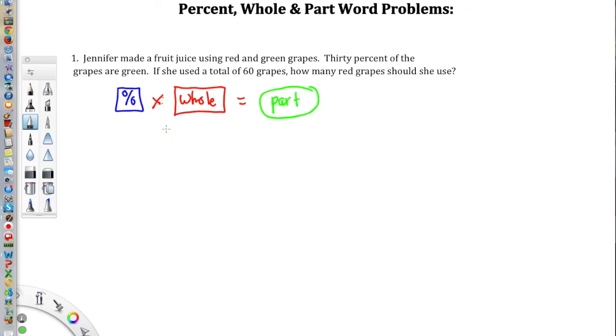Let's read the problem. Jennifer made a fruit juice using red and green grapes. 30% of the grapes are green. Well, 30% are green, so 30%, that would look like that's our percentage of the grapes are green. If she used a total of 60 grapes, total, that sounds like our whole, is 60 grapes.